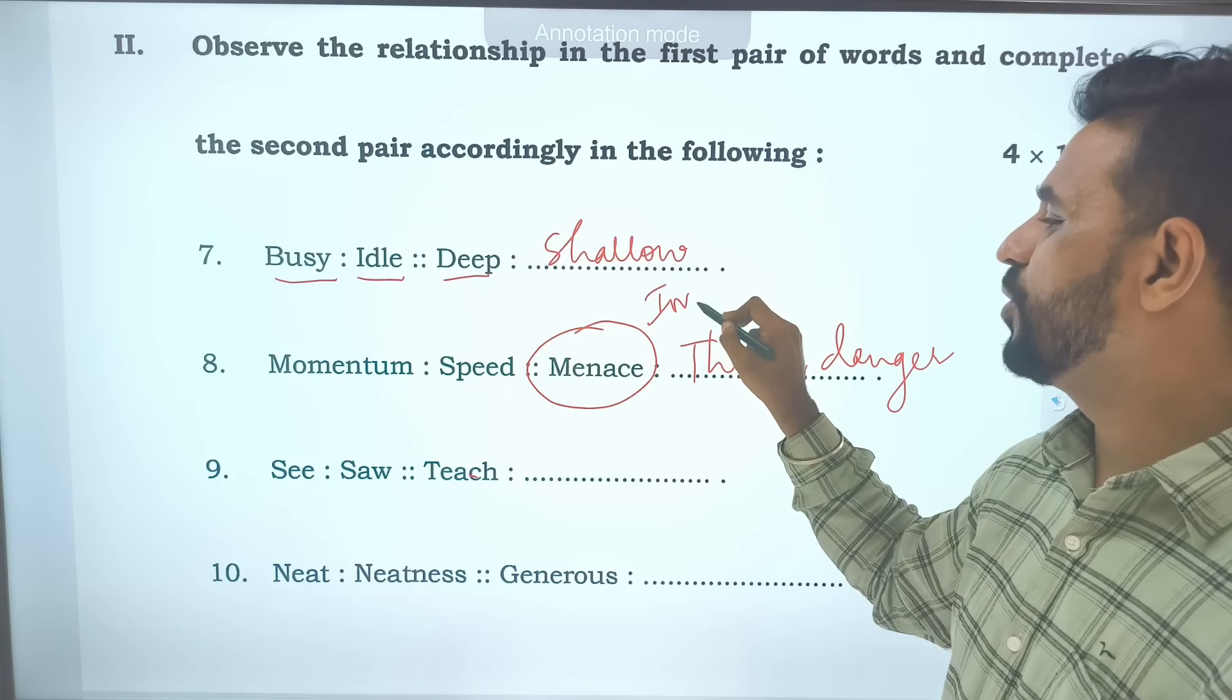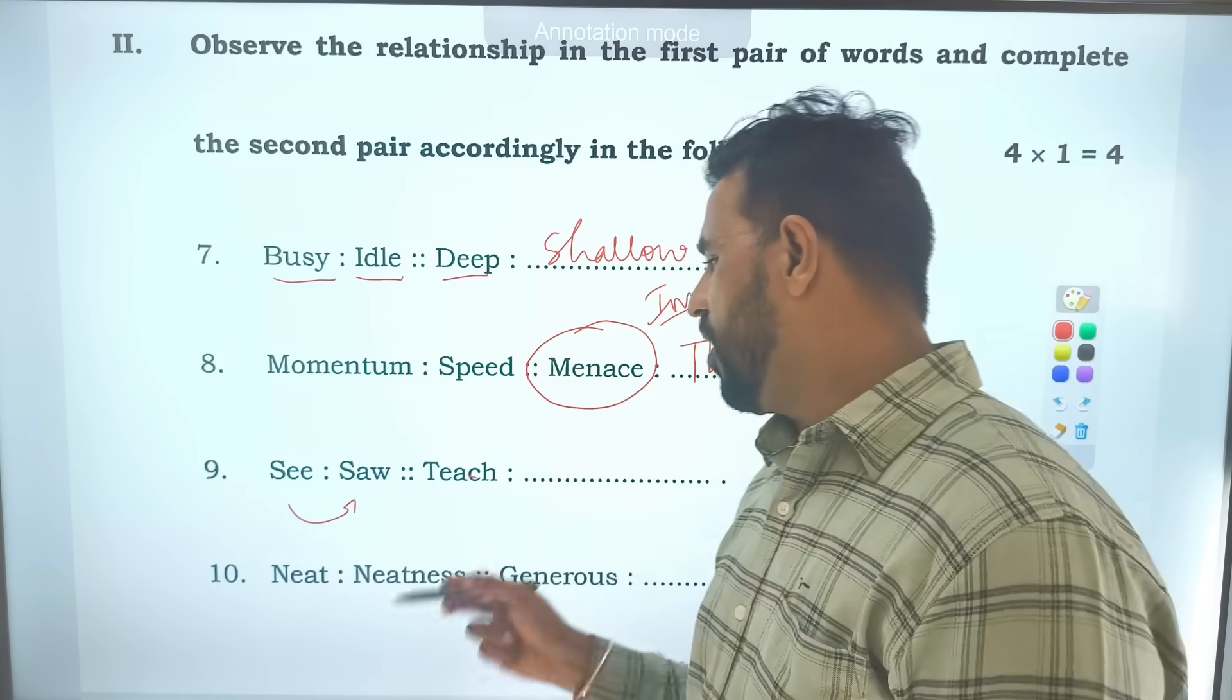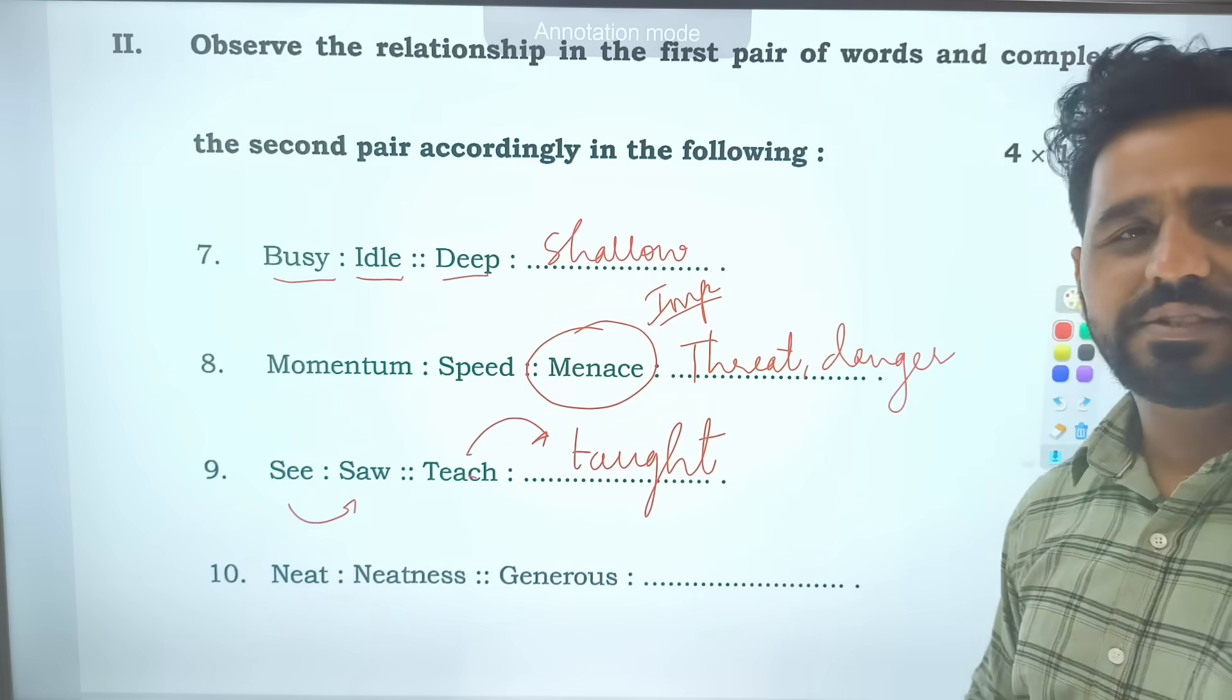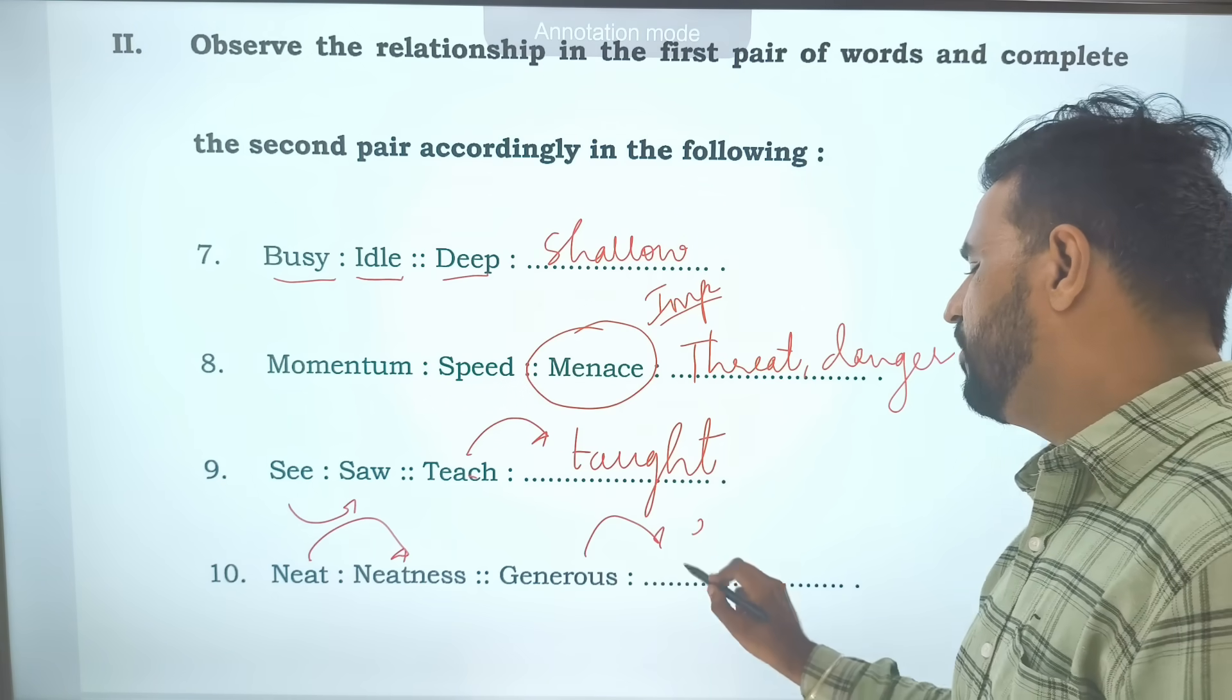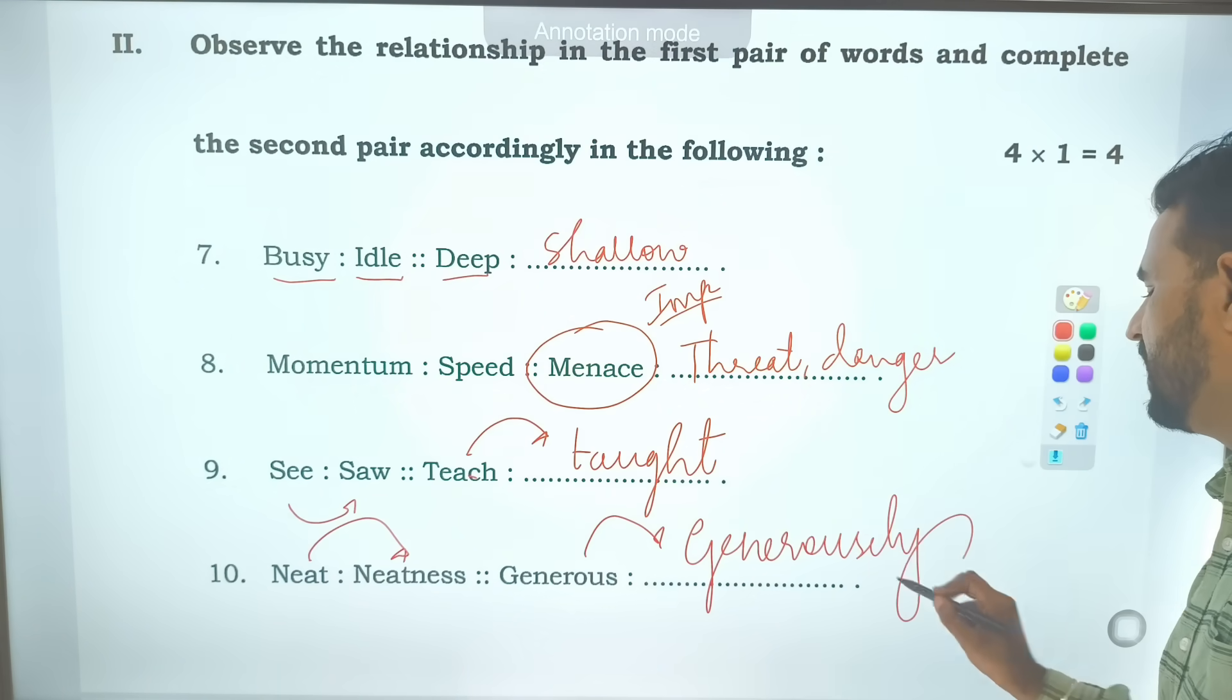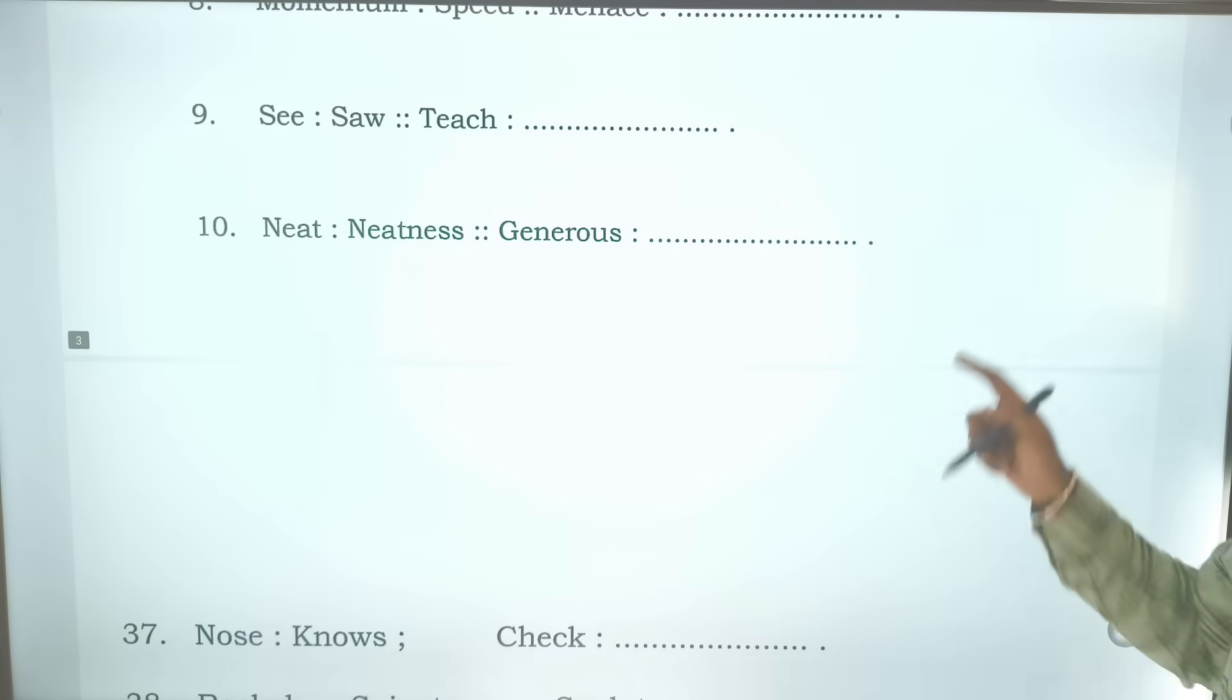Then see. Opposite of see will become saw. Teach will become taught. Teach will become taught. Similarly neat, noun form is neatness. Generous will become generosity. I hope you got this. I just move on to the next part.